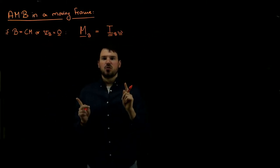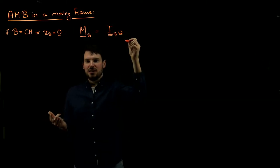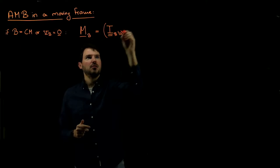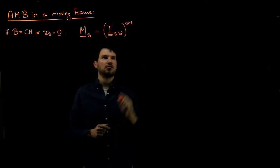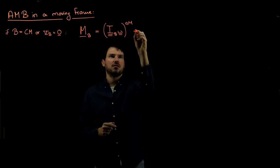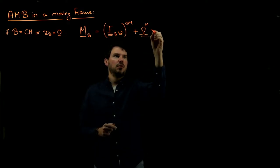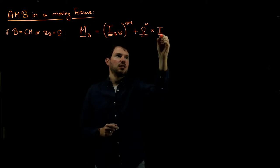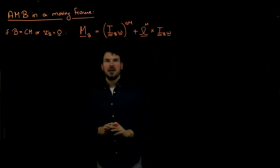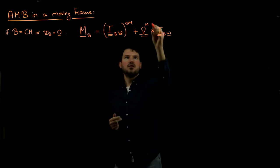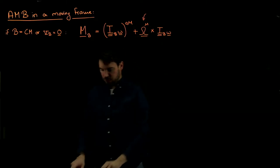Now the catch is that because we're in a moving frame, I need to differentiate with respect to time — d/dt. But in a rotating frame this becomes the derivative seen by the rotating frame, plus omega_M — the angular velocity of the rotating frame — cross I_B times omega. And this is angular momentum balance, where omega_M is the angular velocity of the rotating frame with coordinates E1M, E2M, E3M.